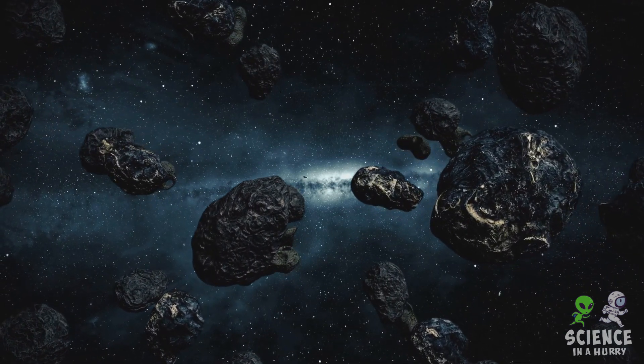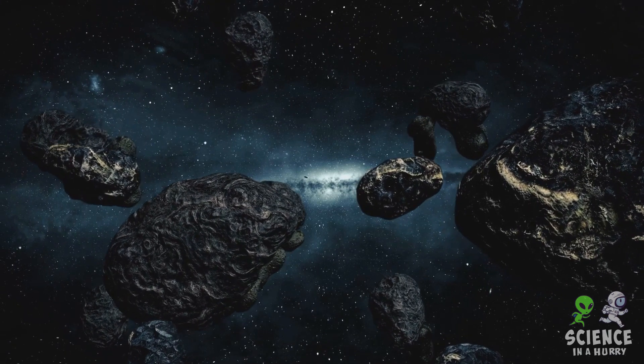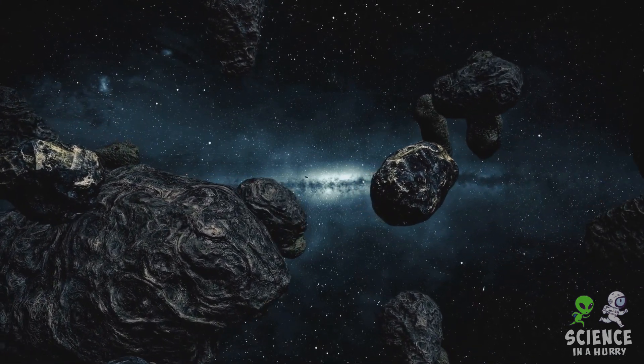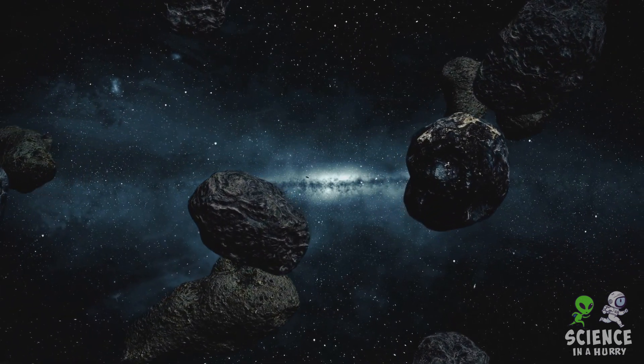Over millions of years, these building blocks gradually assemble into planets, moons, asteroids and comets. The process of accretion, where particles collide and stick together, is fundamental to this phase of planet formation.